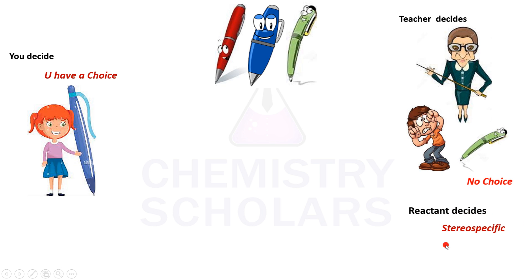When the teacher decides, you have no choice. So the stereochemistry of the product completely depends upon the reactant — the reactant decides. This is called a stereospecific reaction. When you decide, when you have a choice, the product chooses what to be formed — that is called stereoselective.